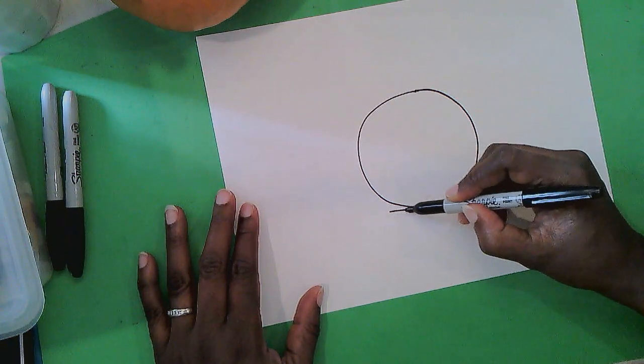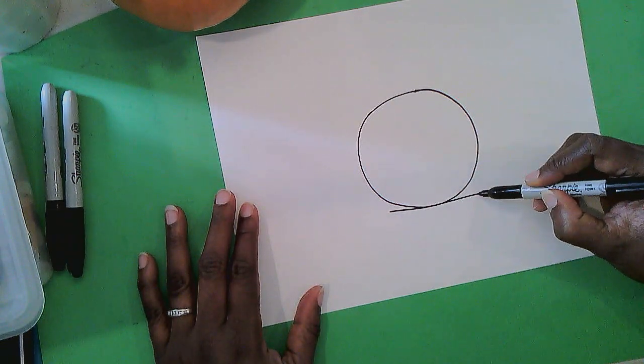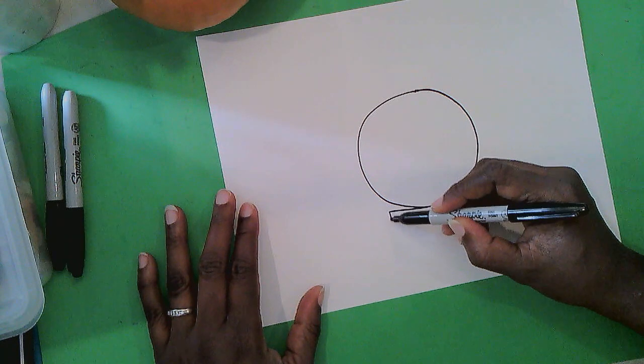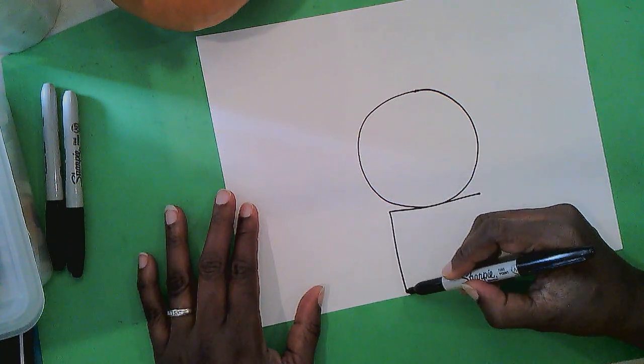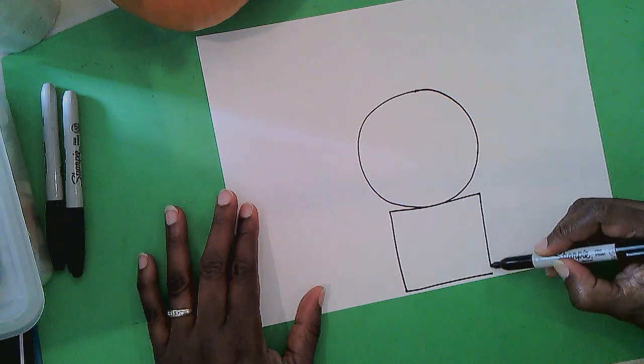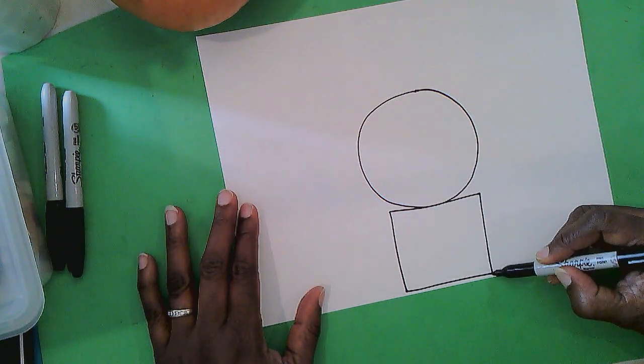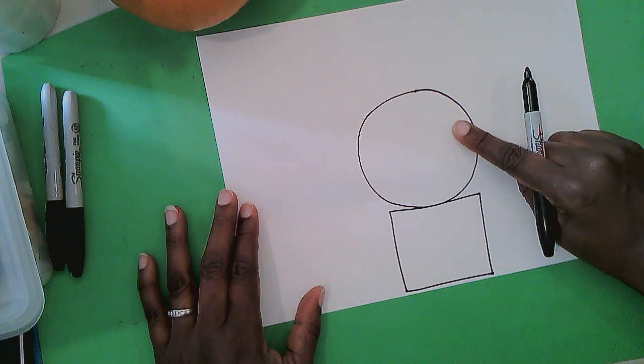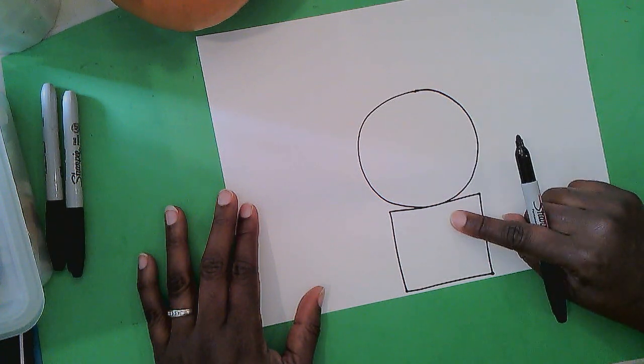Now let's draw his shirt underneath by adding a square. A square right there. So the circle is above and square is below.